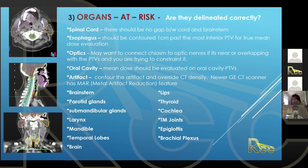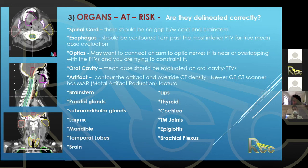Third is organs at risk — there's a lot to contour here. For the spinal cord specifically, there should be no gap between the spinal cord and brainstem. When optimizing on both brainstem and spinal cord, if there is a gap in between, the dose can easily creep up in that space. It's always important that they form one contiguous structure.